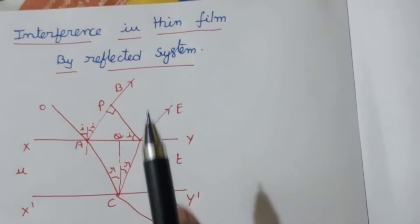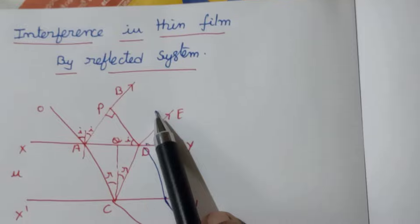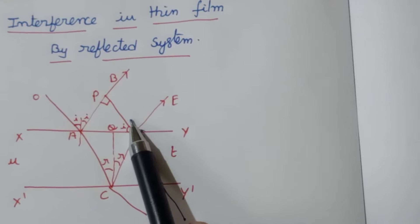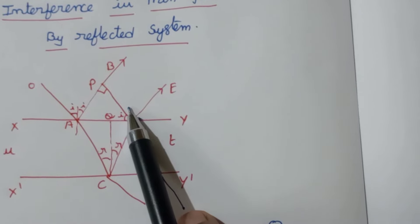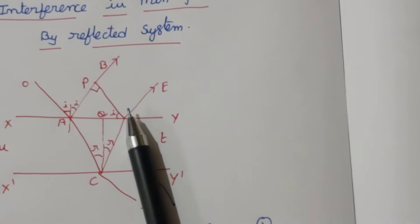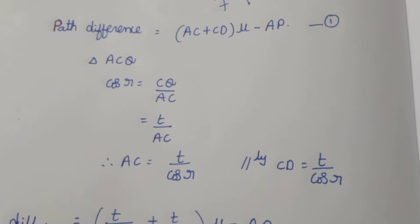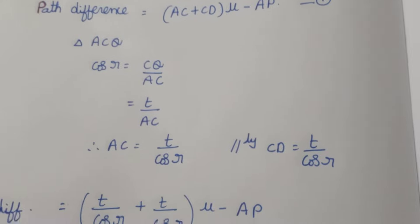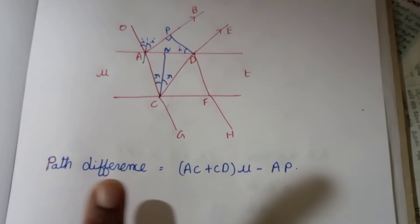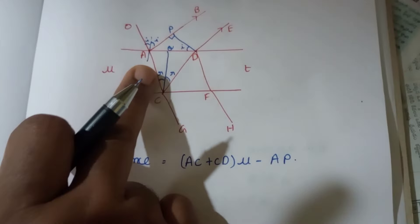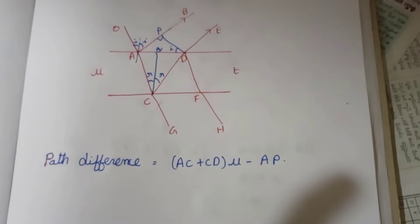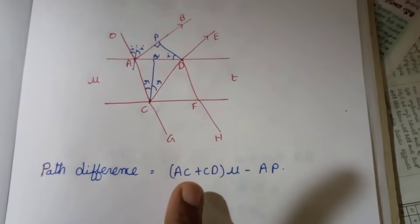Now we will show the two reflected rays AB and DE. We will calculate the path difference. Path difference equals AC plus CD into mu, minus AB. So the path difference equation is: path difference = (AC + CD) × μ − AB.